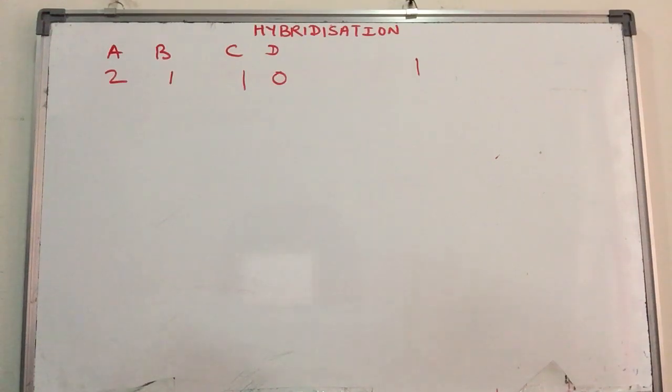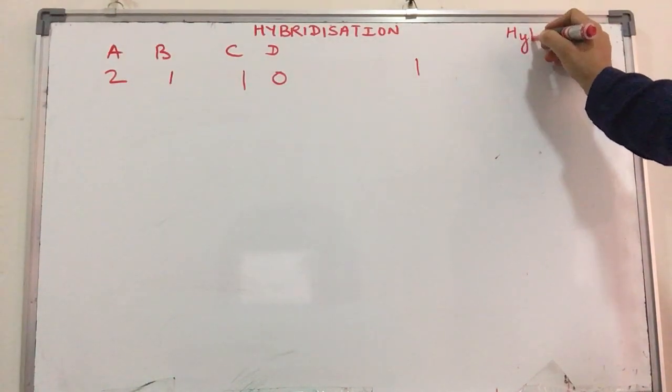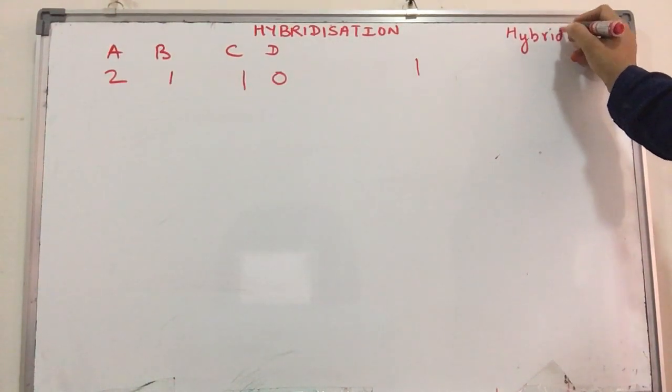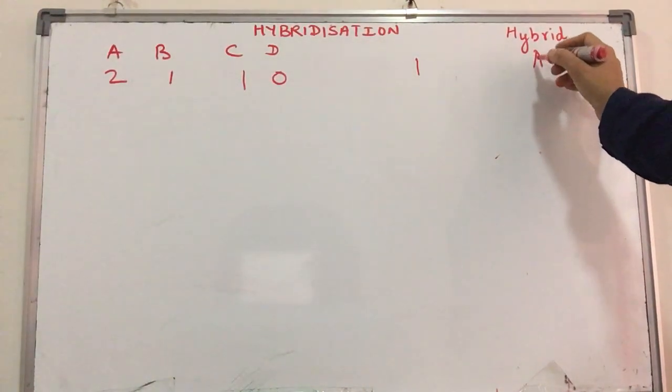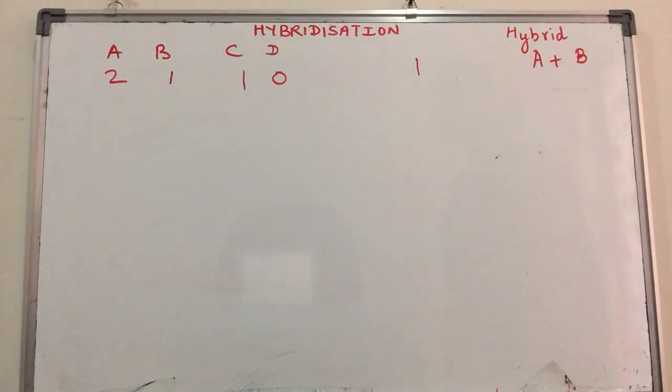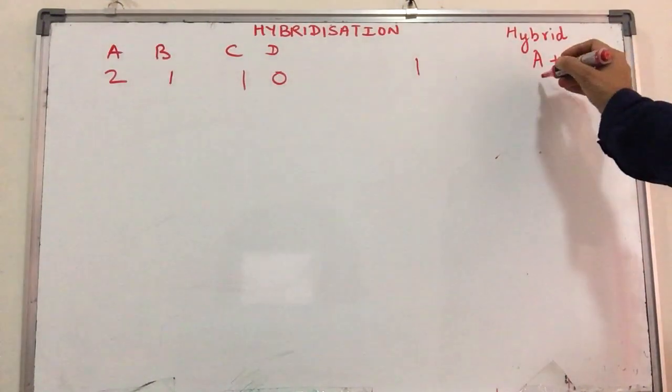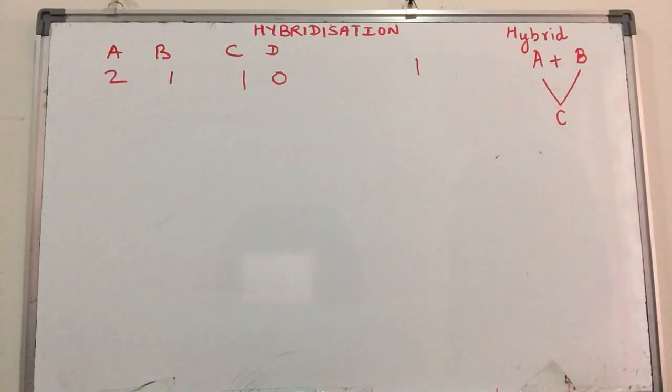Today we are starting with another concept called hybridization. Hybridization comes from the word hybrid, which we encounter with hybrid varieties of crops where two genes from different crops are intermixed and we get a new variety which has the best characteristics of both species.